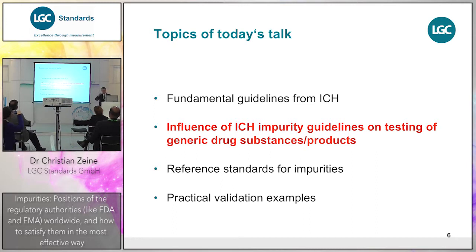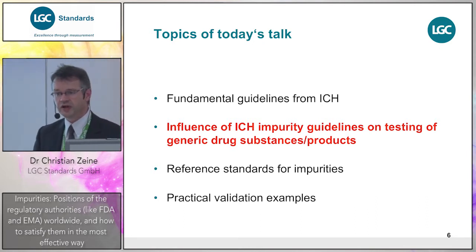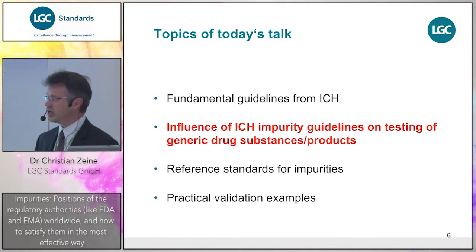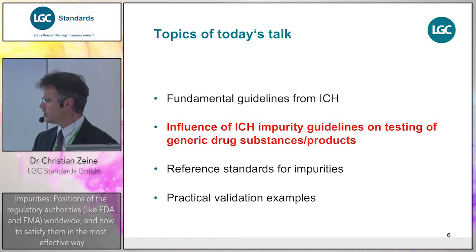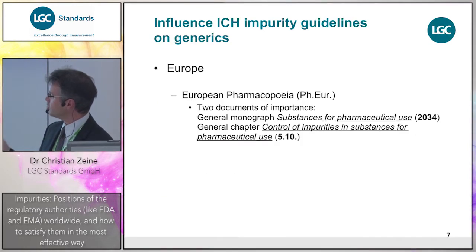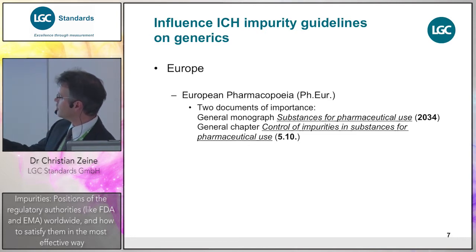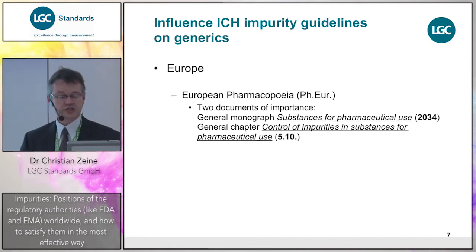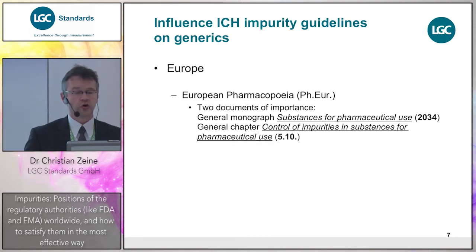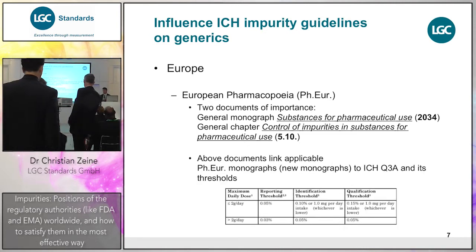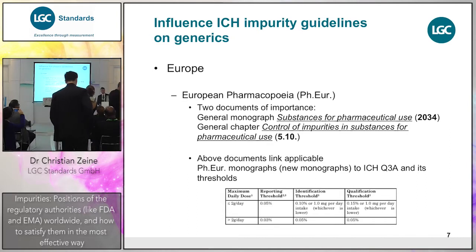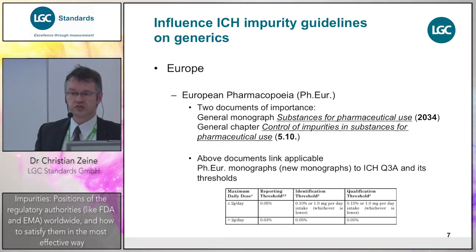Let's look at how the ICH impurity guidelines influence generic drug substances and products, because they were originally developed for new drug substances. They are now applied worldwide also to generics. In Europe, in the European Pharmacopoeia, there are two documents of importance: the general monograph 2034 on substances for pharmaceutical use, and the general chapter on control of impurities for substances in pharmaceutical use. These two documents link all EP monographs to the ICH impurity thresholds.